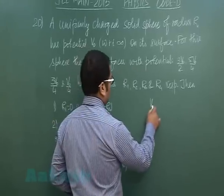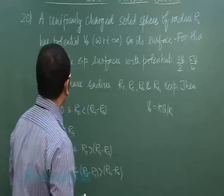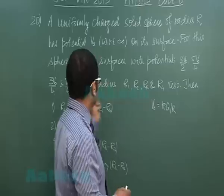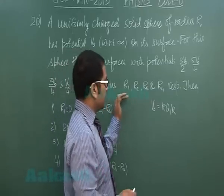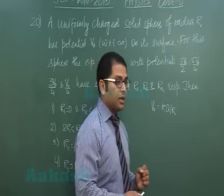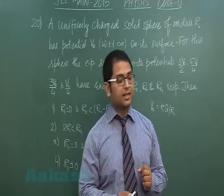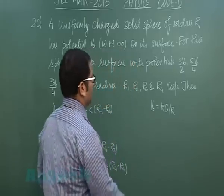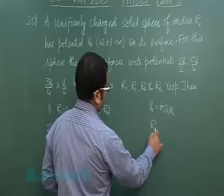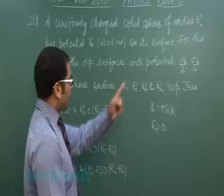From the first data, for this sphere the equipotential surfaces with potentials so much have radius this much. We need to see the correct relation. In this case, the equipotential surfaces are a family of spheres, out of which the first one is very distinct because 3V naught by 2 is the potential at the center, so I'll get R1 as 0.